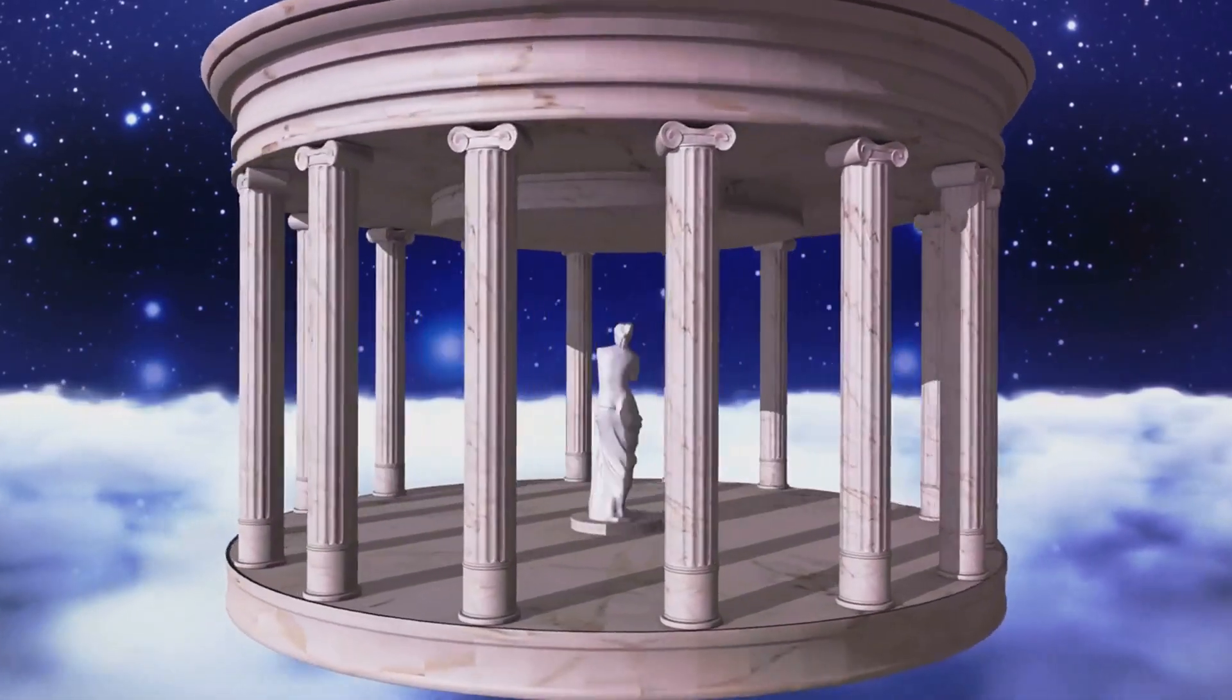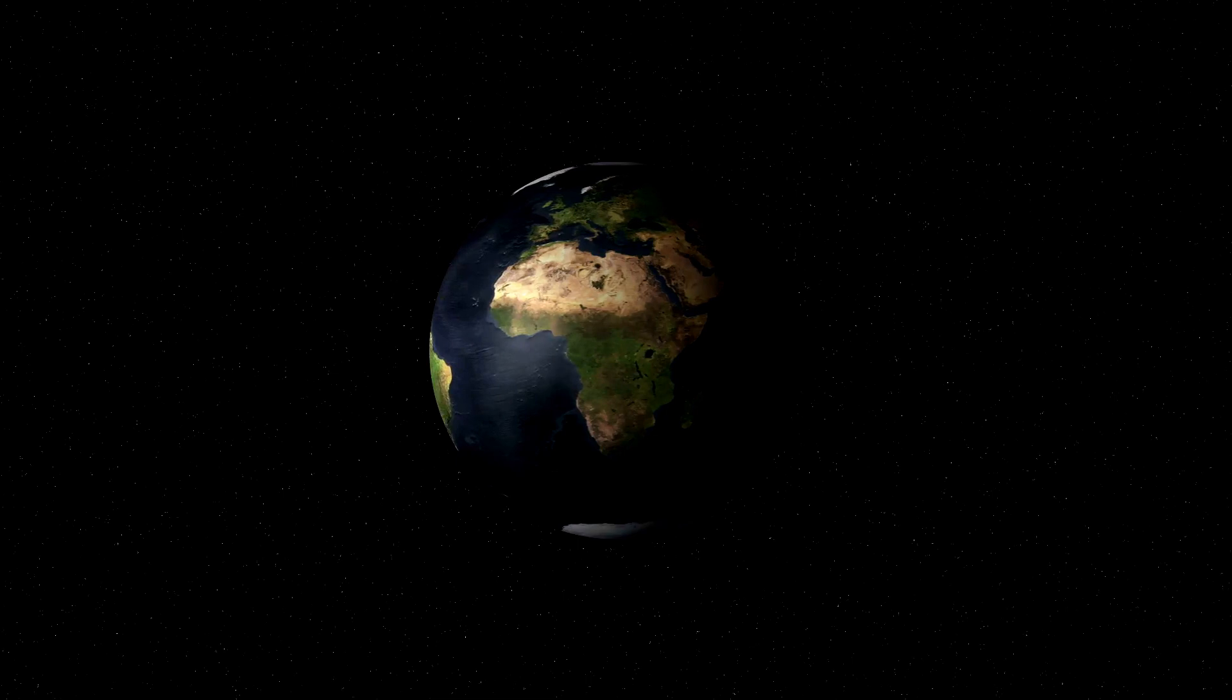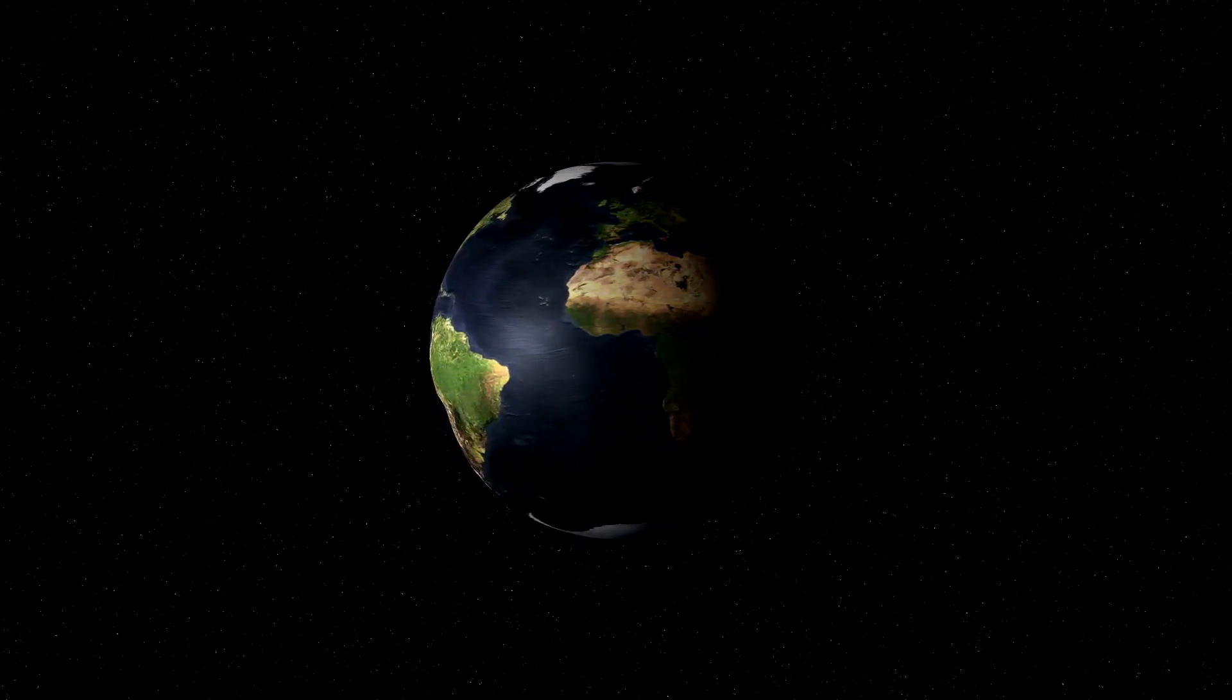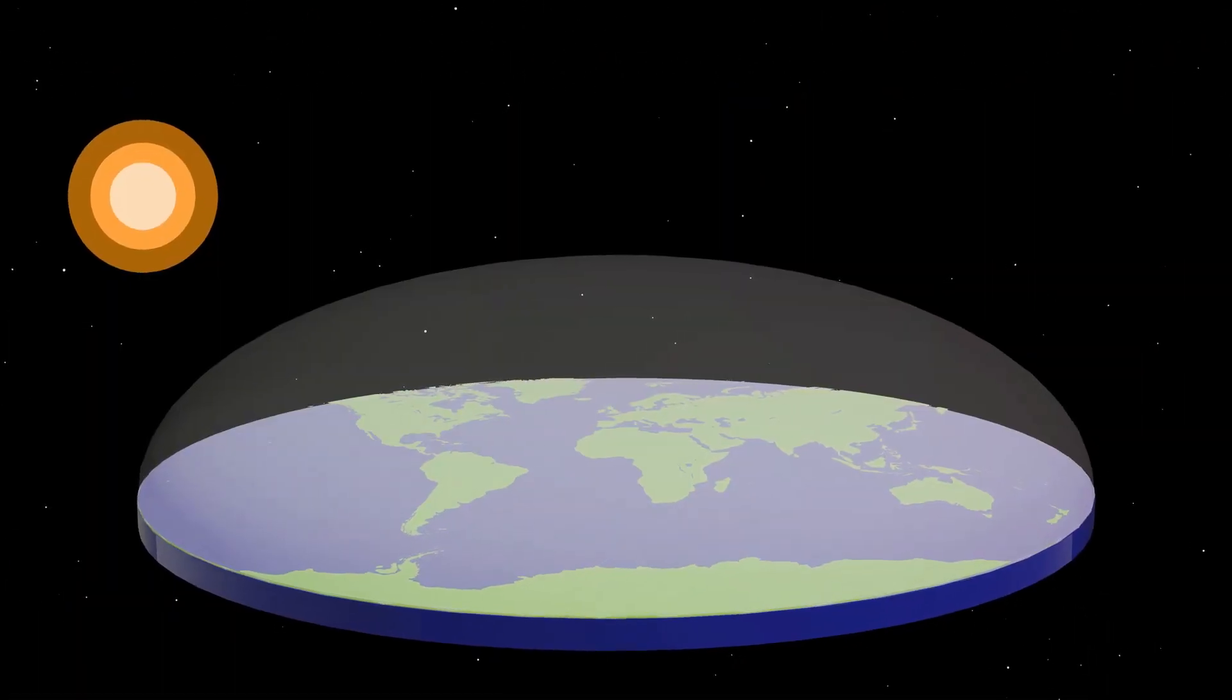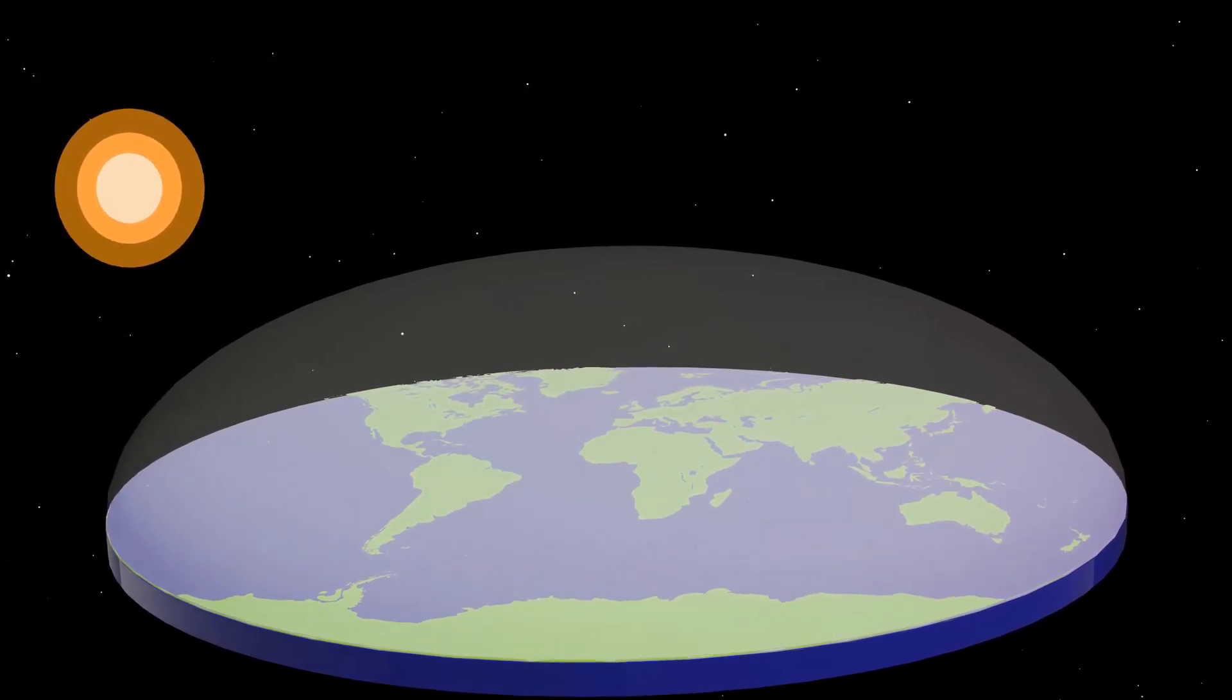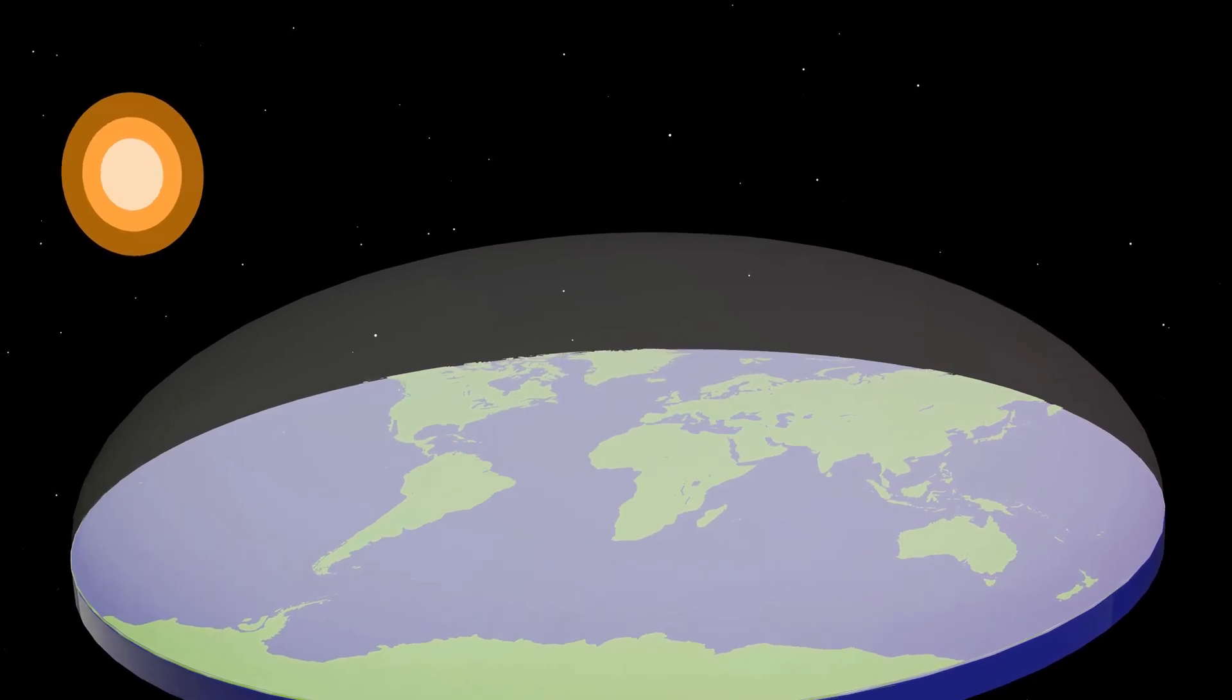The ancient Greeks however made significant strides towards the understanding of a spherical Earth. The philosopher Pythagoras is often credited with being one of the first to propose a spherical Earth in the 6th century BC, and by the 3rd century BC, the Greek astronomer Eratosthenes had even calculated the Earth's circumference with remarkable accuracy.